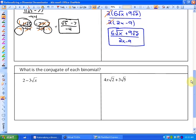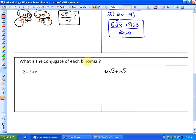Finally, just as a quick additional thing, if you're asked what is the conjugate of a binomial, it's essentially just saying, to make a difference of squares, the conjugate of 2 minus 3 root x would be 2 plus. So the conjugate would be 2 plus 3 root x. So the conjugate of 4x root 2 plus 3 root 5 would be 4x root 2 minus 3 root 5.